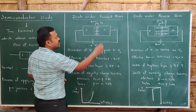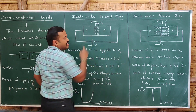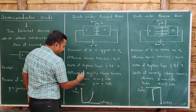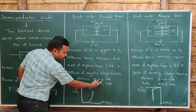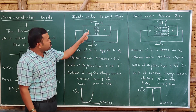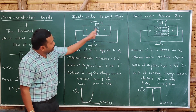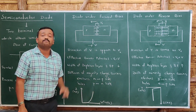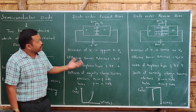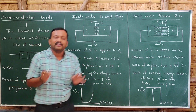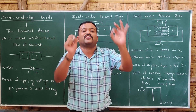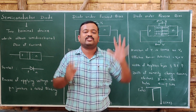What are the majority charge carriers? In the N side, electrons are the majority charge carriers, so electrons move from N to P. In the P side, holes are the majority charge carriers, so holes move from P to N. This kind of motion happens in forward bias — diffusion of majority charge carriers takes place as the depletion region decreases.